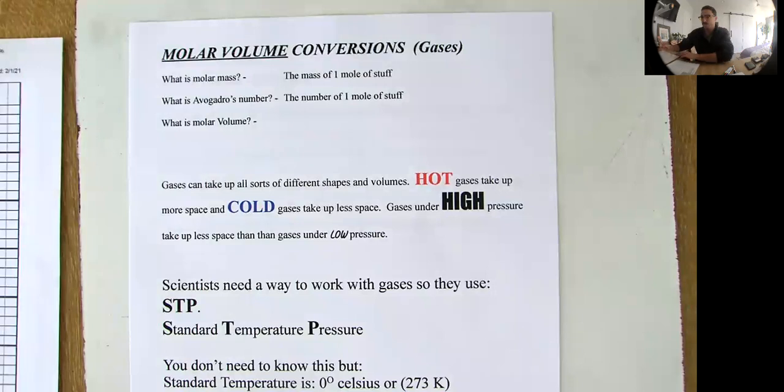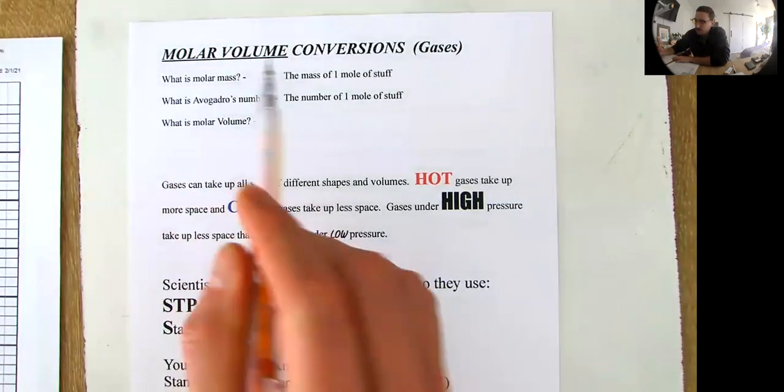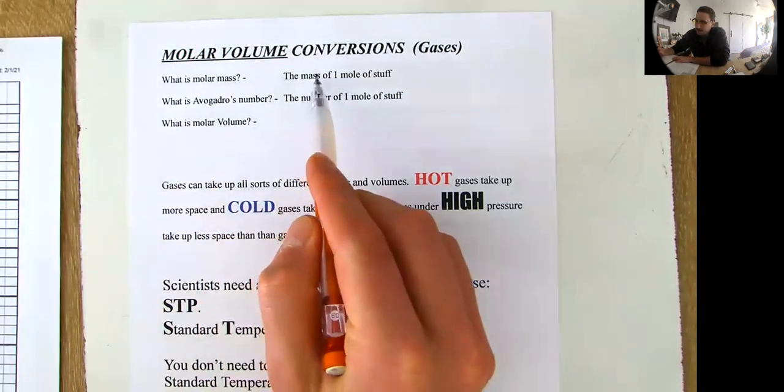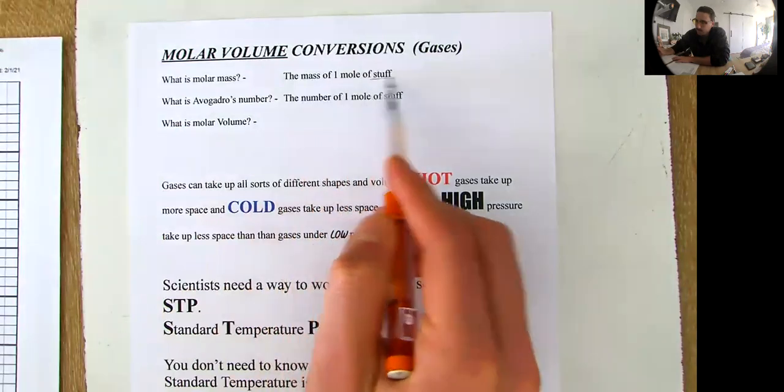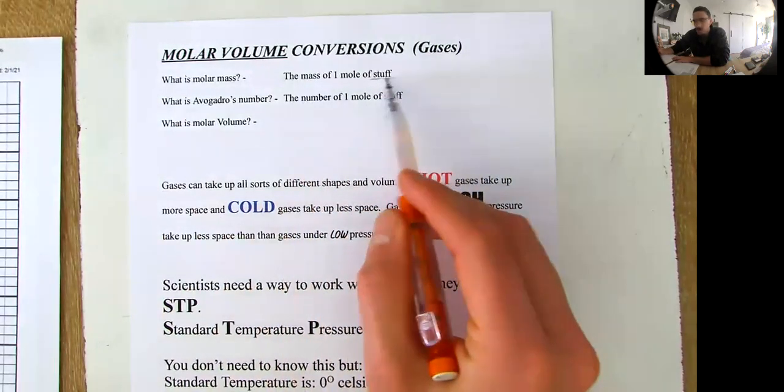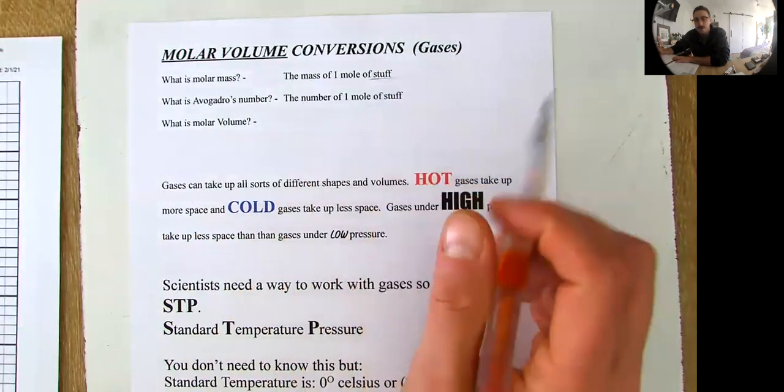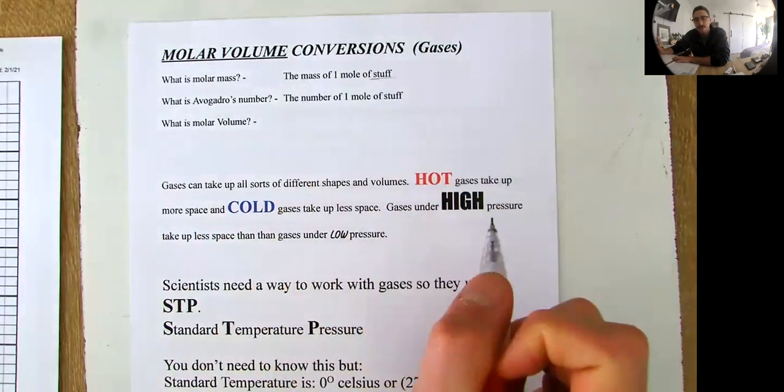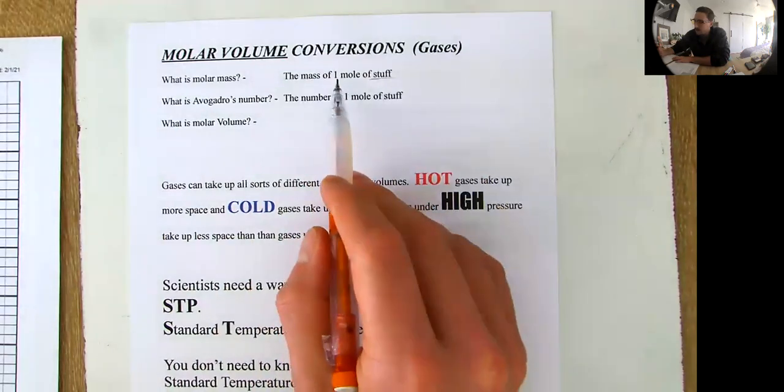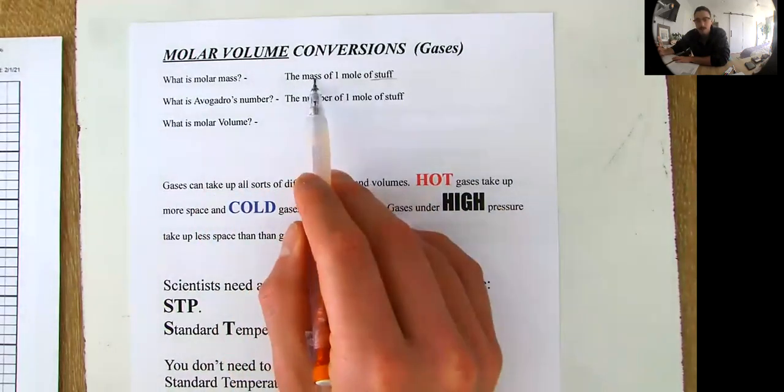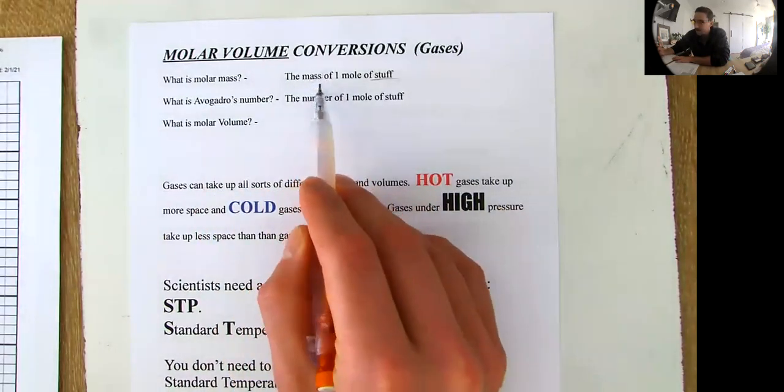Alright students, so let's review with these first two questions. What is molar mass? Molar mass is the mass measured in grams of one mole of stuff, of anything. That could be H2O or CO2 or aluminum hydroxide or magnesium nitrate. The molar mass is the number of grams, that's the mass, of one mole of stuff.